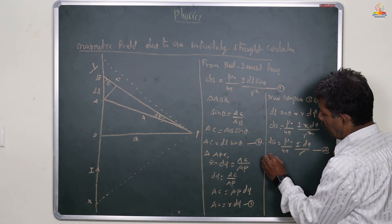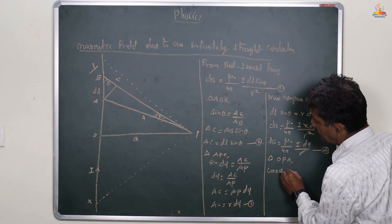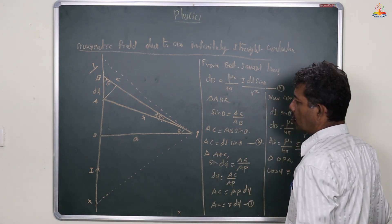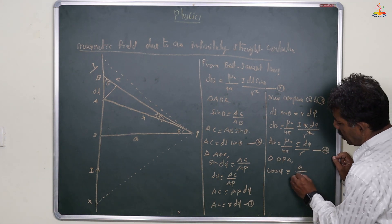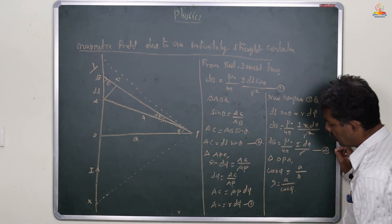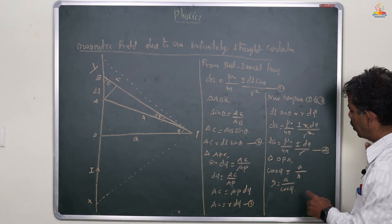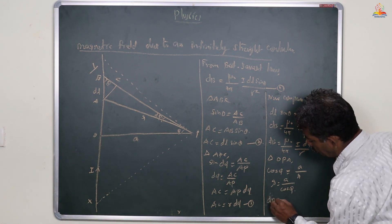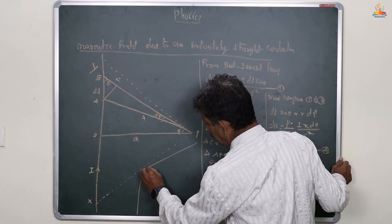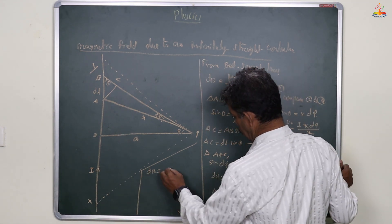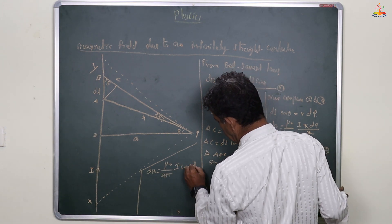Now take another triangle OPA. Cos φ is equal to adjacent side by hypotenuse, which is a by R. So R equals a divided by cos φ. Substituting R into equation 4: dB equals μ₀ by 4π times I dφ divided by (a by cosφ), which gives dB equals μ₀ by 4π times I cosφ dφ divided by a.